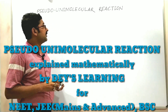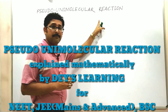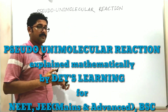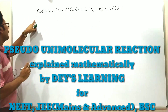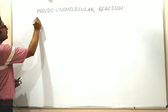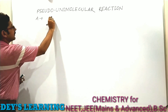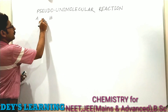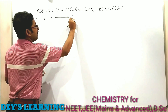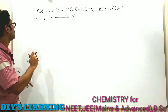Today's lesson is pseudo-unimolecular reaction, which belongs to chemical kinetics. Let us consider a reaction A plus B to form the product P. This is a second order reaction.